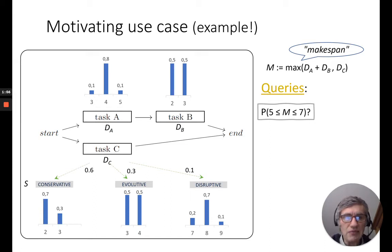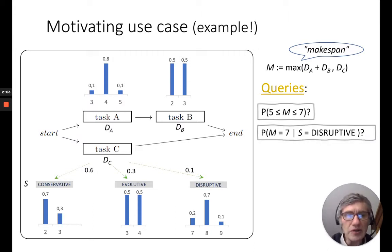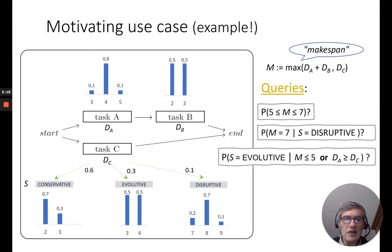Based on this small model, we can have several queries. What is the probability that the makespan is in a given range? We can calculate also a conditional probability, like here. We observe that the scenario is disruptive. What is the probability that the makespan is seven days? And we can have even more involved queries like this one, which is also a conditional probability, but this time we use our observations are made of inequalities or even an OR.